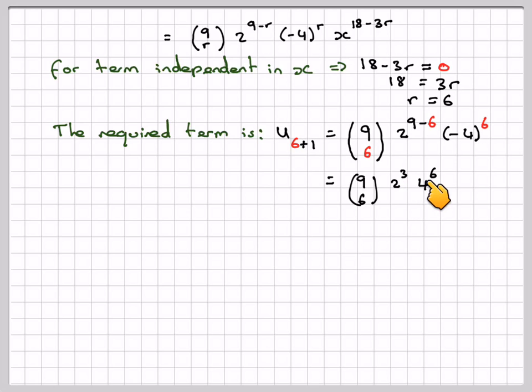Notice the two powers, 3 plus 6, add up to the total power, which is 9. Then working that on my calculator, I'm going to get 2,752,512.